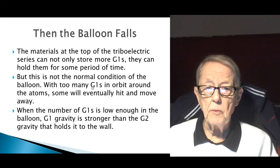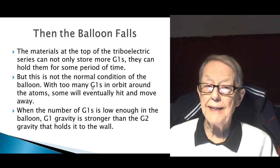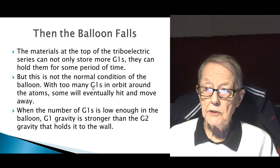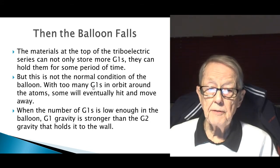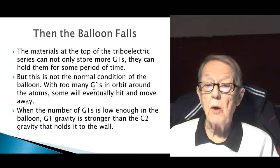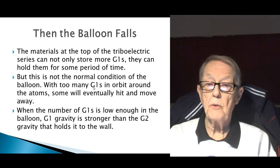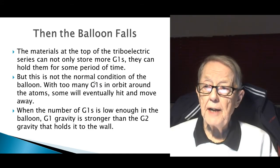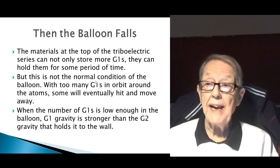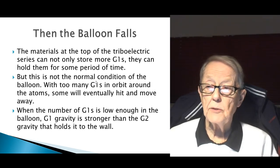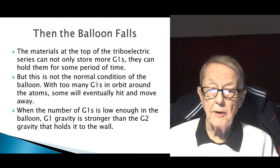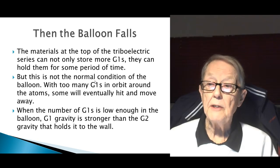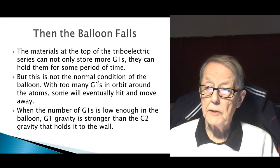This is not the normal condition of the balloon. With too many G1s in orbit around the atom, some will eventually hit and move away, and hence the balloon discharges automatically, losing G1s. When the number of G1s is low enough in the balloon, G1 gravity then becomes stronger than the G2 gravity that holds it to the wall, and the balloon falls. The wall will gain some of the G1s back because it has room to accept them, and eventually some will get trapped and things will return to normal.